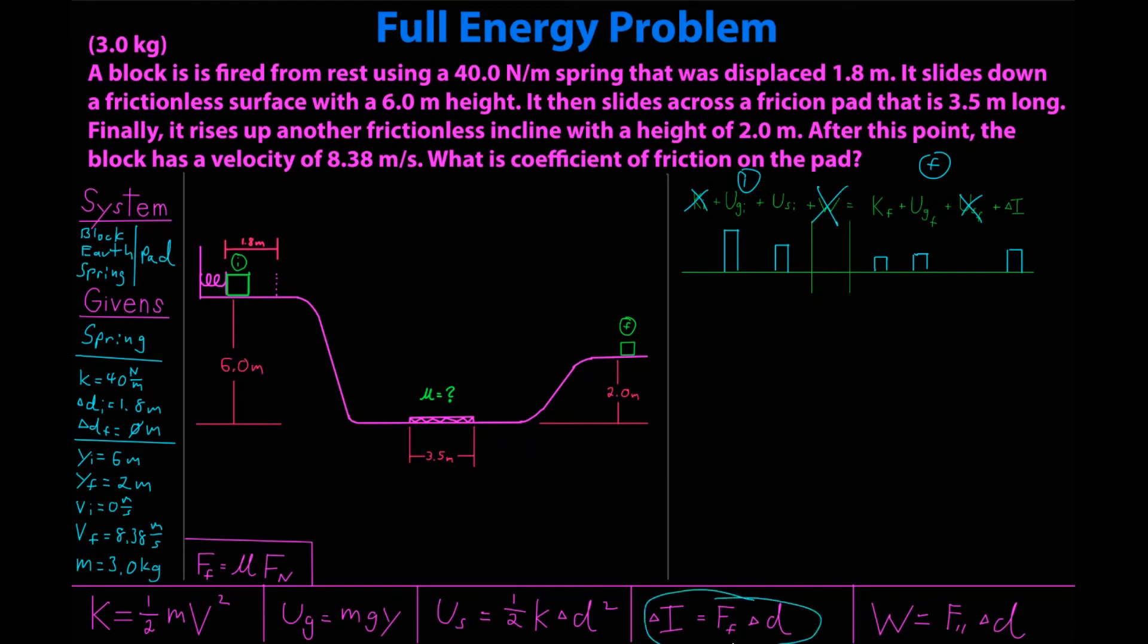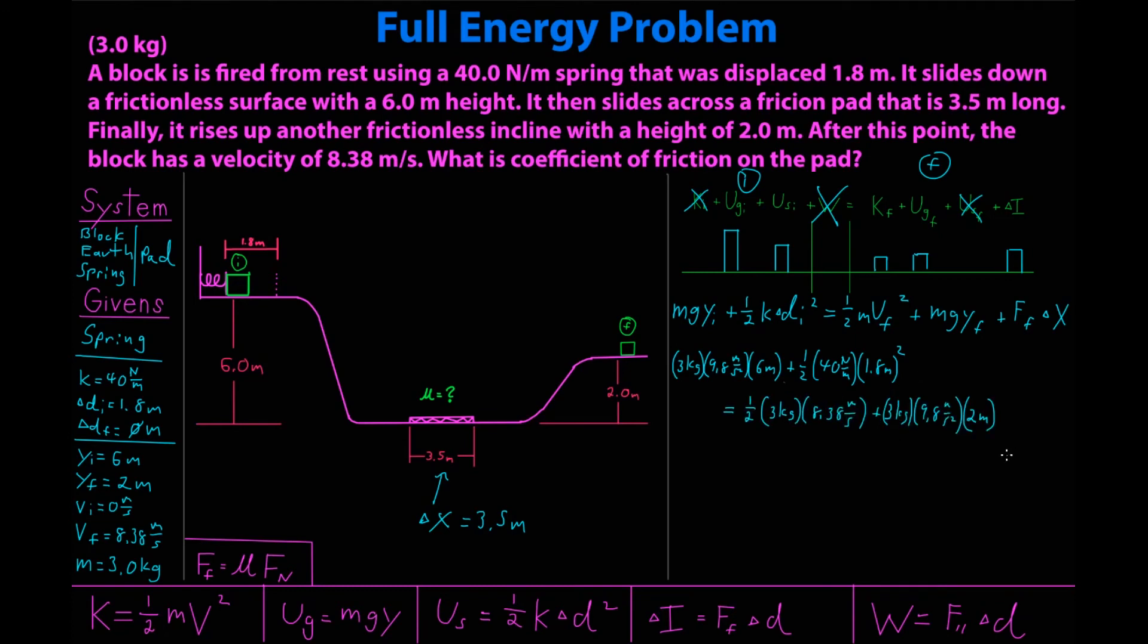Now, another reminder, this is not an official equation for internal energy. However, in a first year physics course, this is the only equation you will use in regards to it. I will literally take my bar graph and use my bar graph to create a relationship. One more thing I'm going to do is mark this displacement as delta x to separate it from my displacement for the spring. So that is going to be my last given. Now, using my bar graph, I'm going to create my full relationship in one shot. mg height initial plus one half k delta d initial squared plus one half mvf squared plus mgy final plus force friction delta x. Now, I'm going to take my givens and plug them in here. 3 kilograms times 9.8 meters per second squared times 6 meters plus one half 40 newtons per meter times 1.8 meters squared plus one half 3 kilograms times 8.38 meters per second squared plus 3 kilograms times 9.8 meters per second squared times 2 meters plus force friction times 3.5 meters.